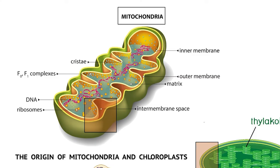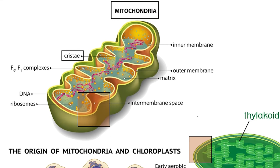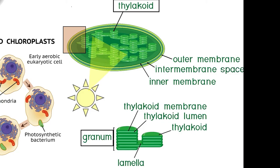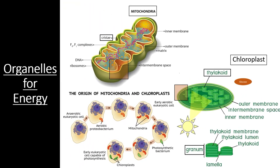The inner membranes of these organelles are highly folded to increase surface area for important biochemical reactions. In mitochondria, the folds of the inner membrane are called cristae, and they house the electron transport chain that moves energy from the bonds of glucose to the bonds of ATP. In chloroplasts, the inner membrane is folded into a large number of thylakoids. These disc-like structures are stacked into units called a granum, and each chloroplast is filled with a large number of grana. Thylakoids capture the energy from sunlight using a system of electron transport chains known as photosystems, using that energy to form molecules of glucose. Together, these two organelles provide energy for almost all of the life on Earth.